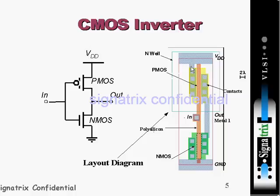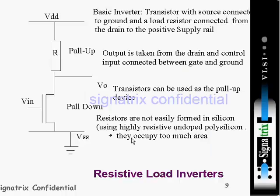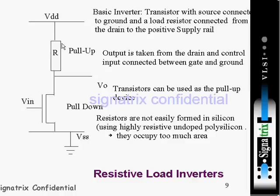Inside your chip, the inverter will look like this — a resistive load inverter. It is a basic inverter transistor with the source connected to ground and a load resistor connected from the drain to the positive supply rail. Instead of the PMOS transistor used in CMOS, we are using a pull-up resistor, with output taken from the drain and input applied at the gate.